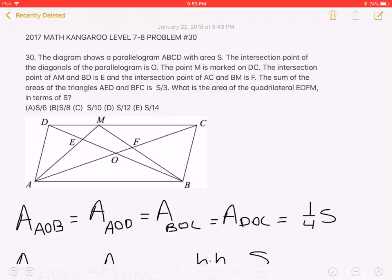The diagram shows a parallelogram ABCD with area S. The intersection point of the diagonals of the parallelogram is O. The point M is marked on DC.